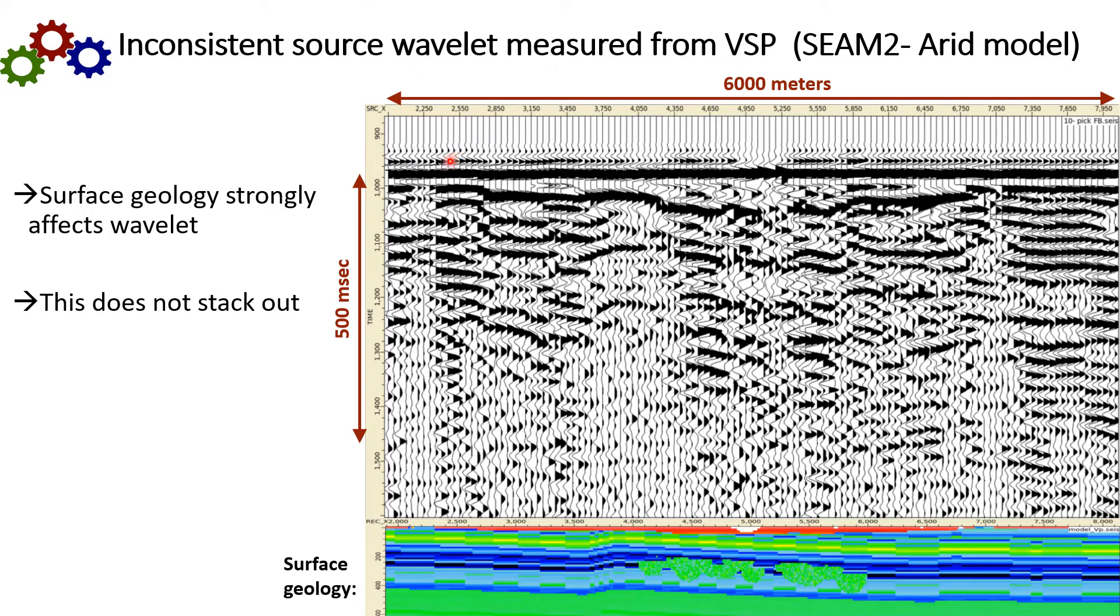Here you see the effective source wavelet variations across the SEAM model. The actual physical source function at the surface is just a very narrow impulse. But the near surface causes a lot of ringing that lasts for quite a long time, up to 500 milliseconds after the initial source. And there are significant variations across the model. Also, if you look at this precursor event here, you can see some significant amplitude variations.